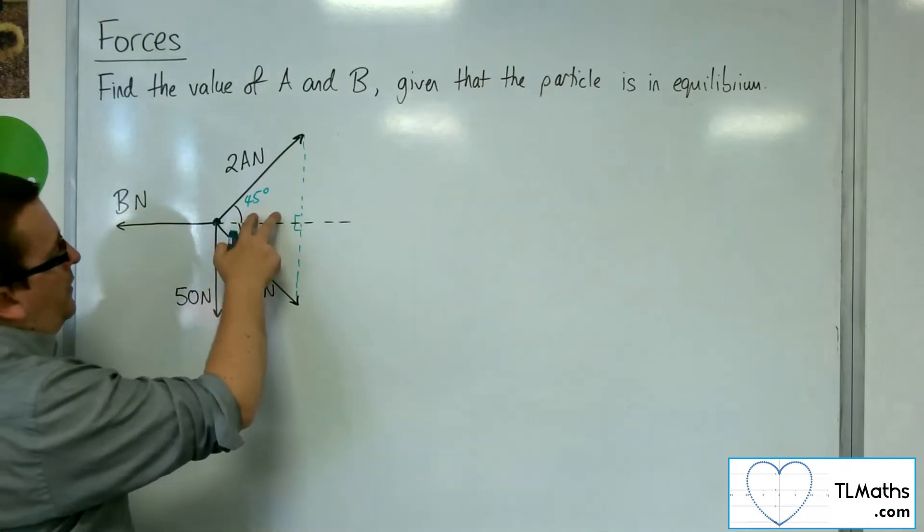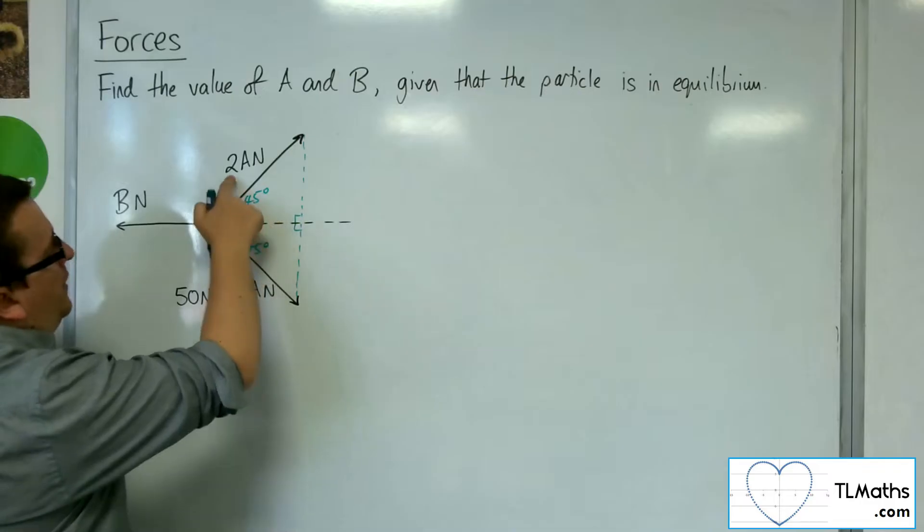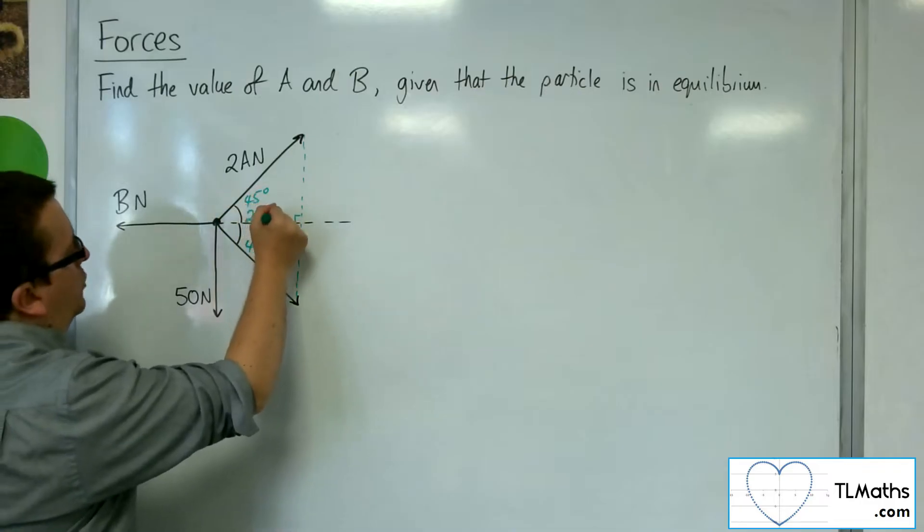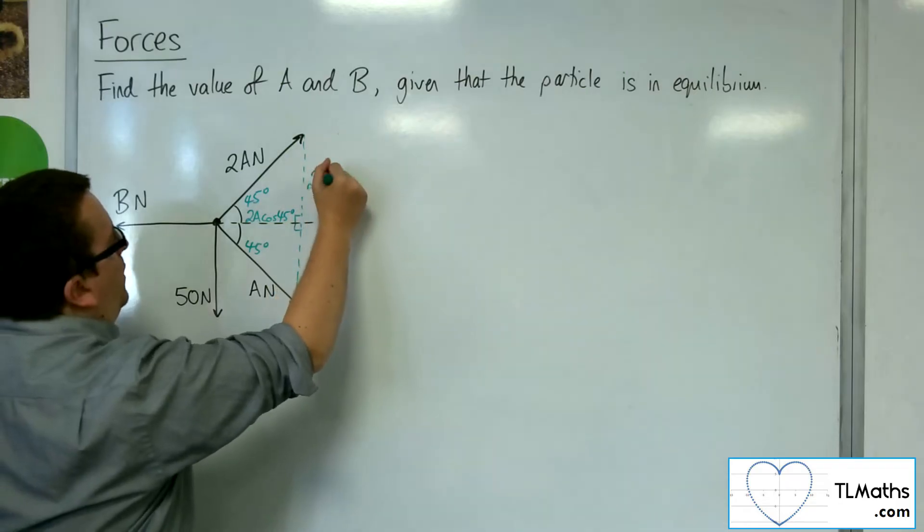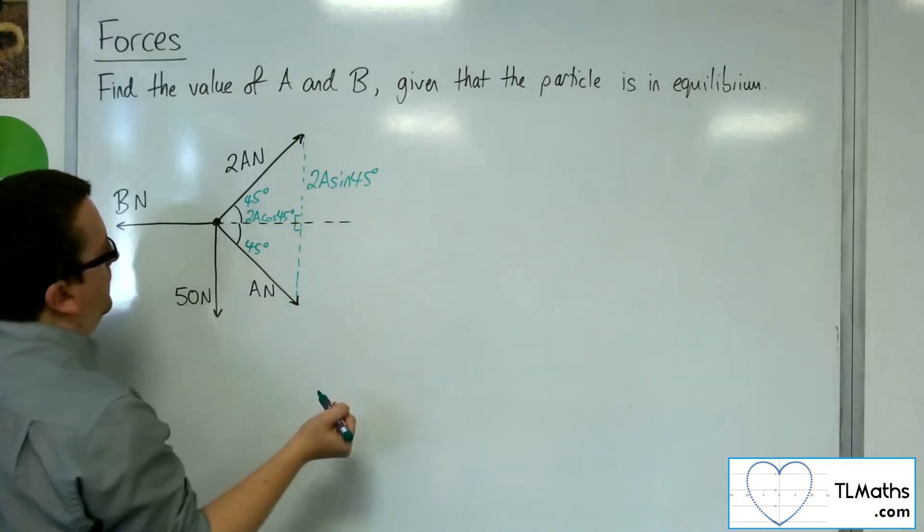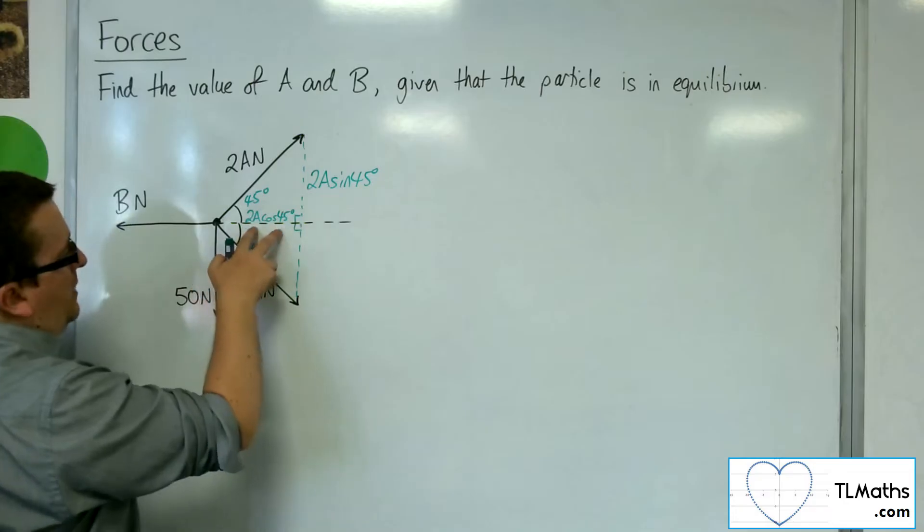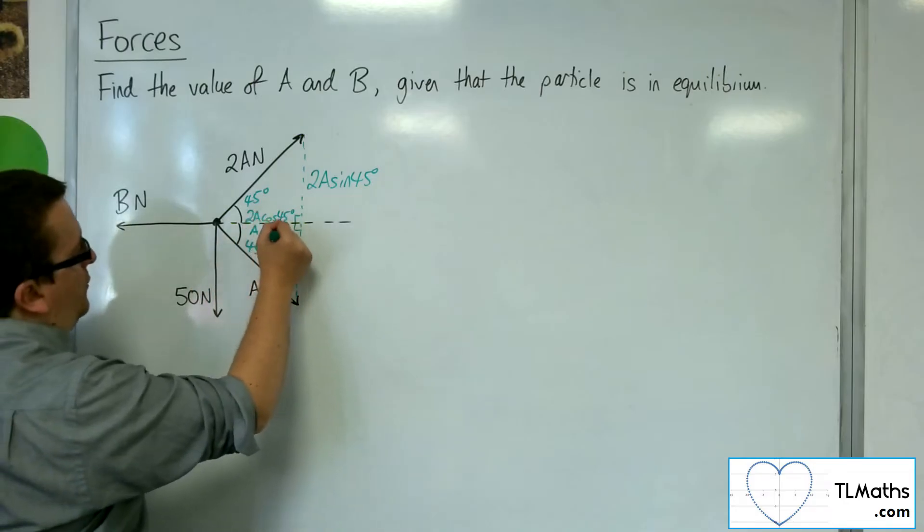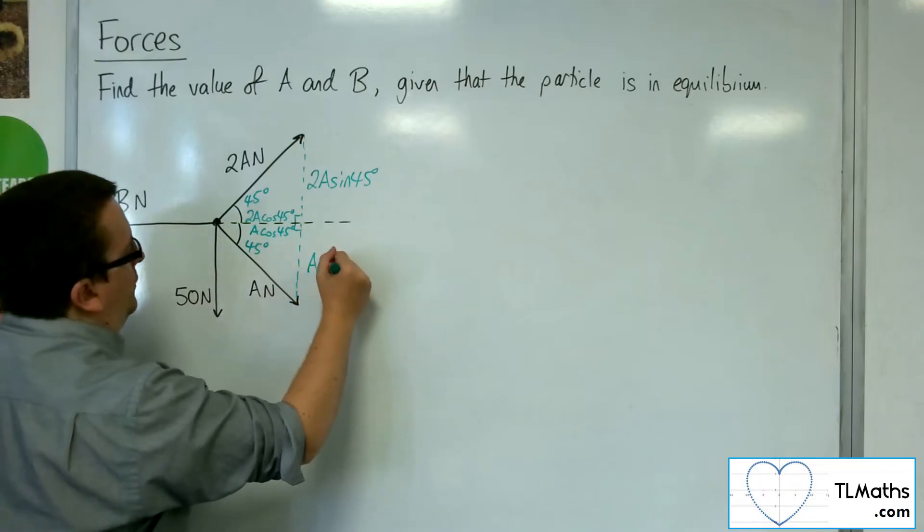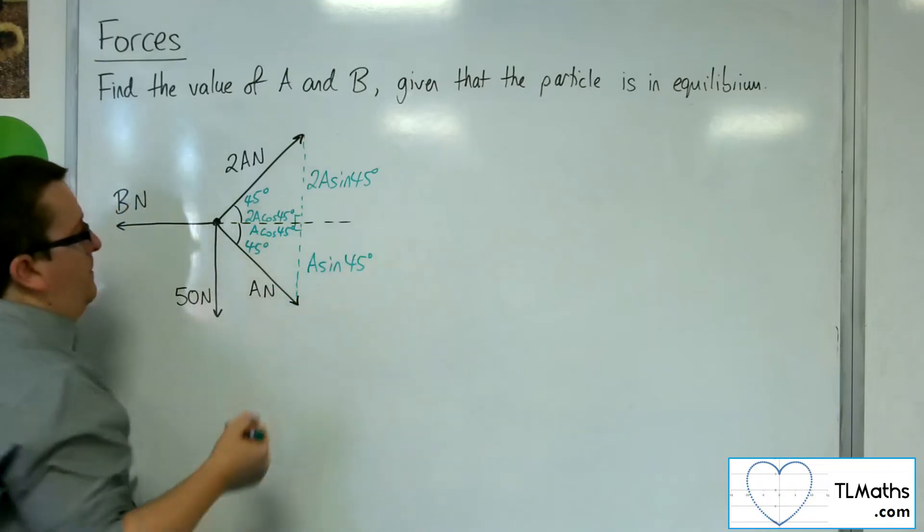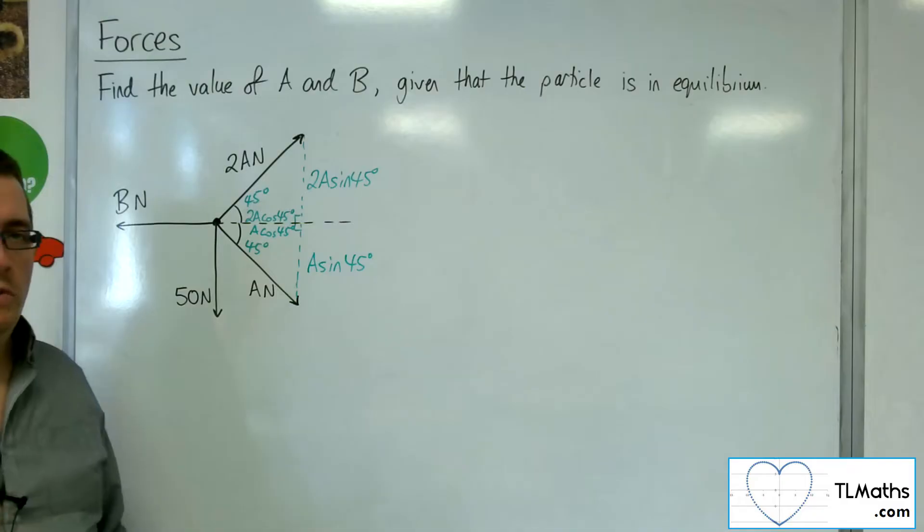So the adjacent side involves cosine, so that's 2A cosine 45, and the opposite side will be 2A sine 45. Then here I'm going to have A cosine 45 and A sine 45. So this is the situation I'm dealing with.